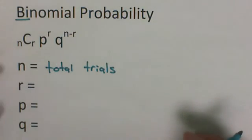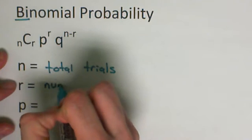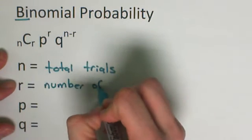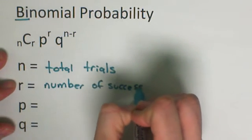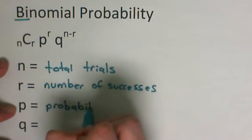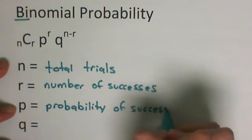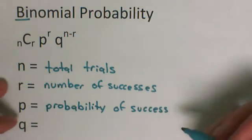r is how many successes you want. p is going to be our probability of success. And then q is going to be our probability of failure.